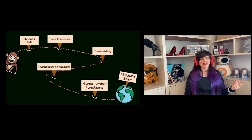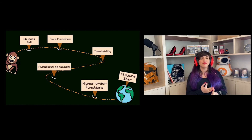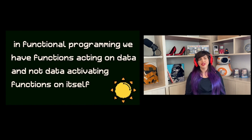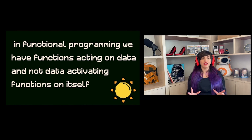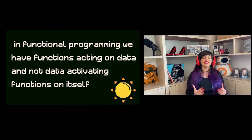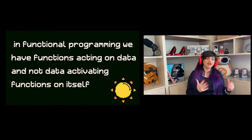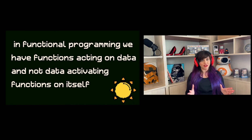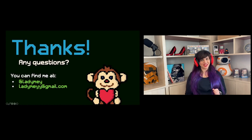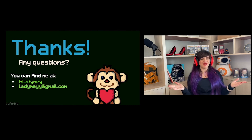So that's it. We have not used objects. We talked about pure functions, immutability, functions as values, and higher order functions. What I want you to take away is: in functional programming, we have functions acting on data — not data activating functions on itself. That's very important to remember. Thank you for listening. I hope you enjoyed my talk. If you have any questions, feel free to reach out.